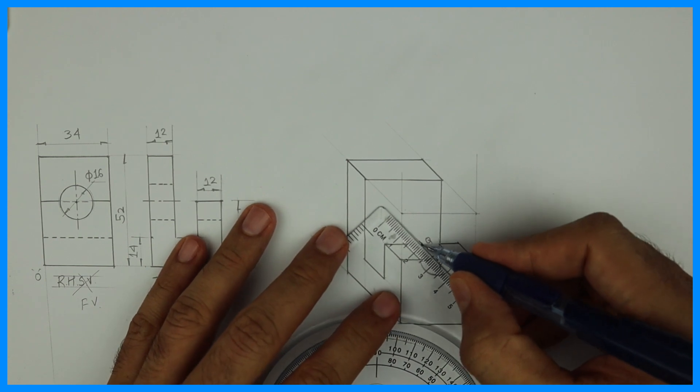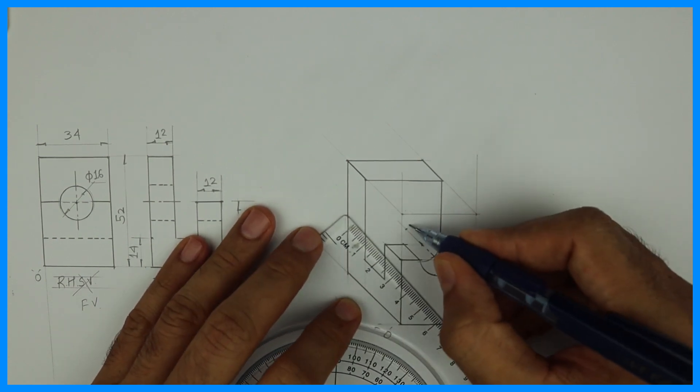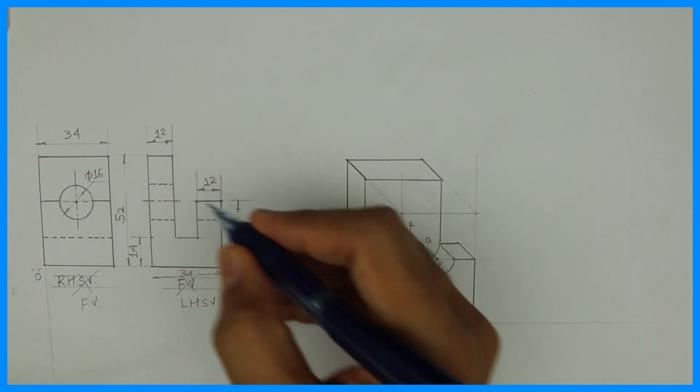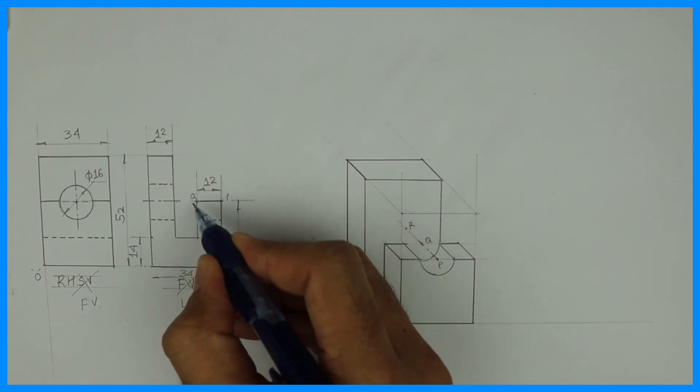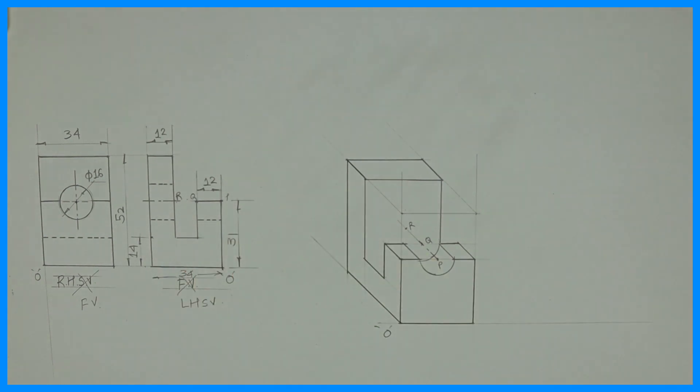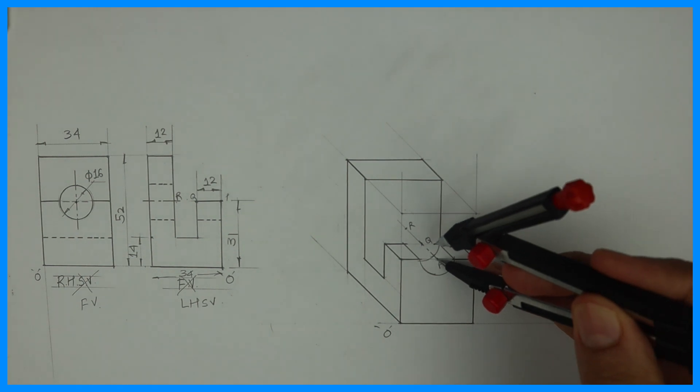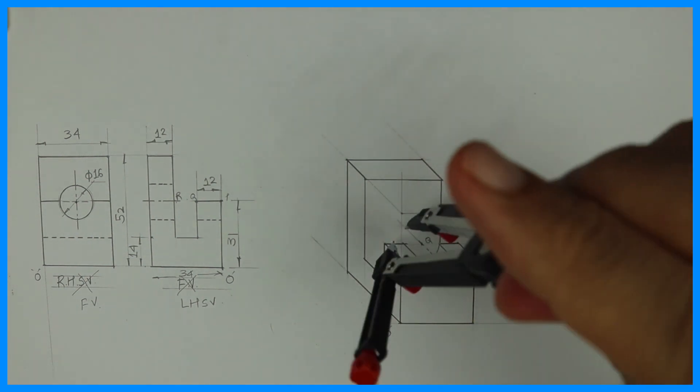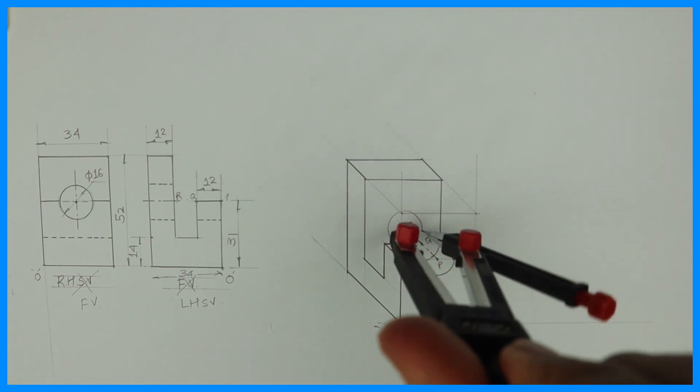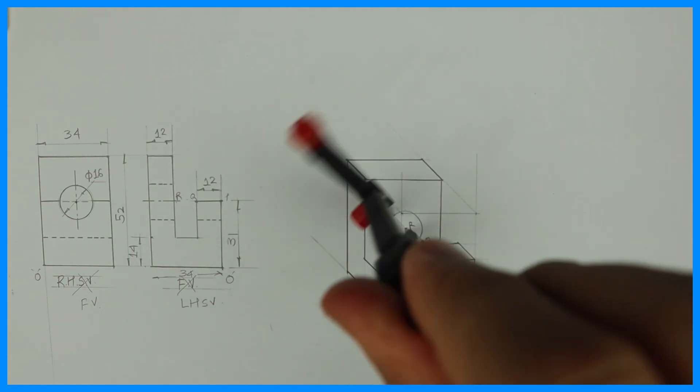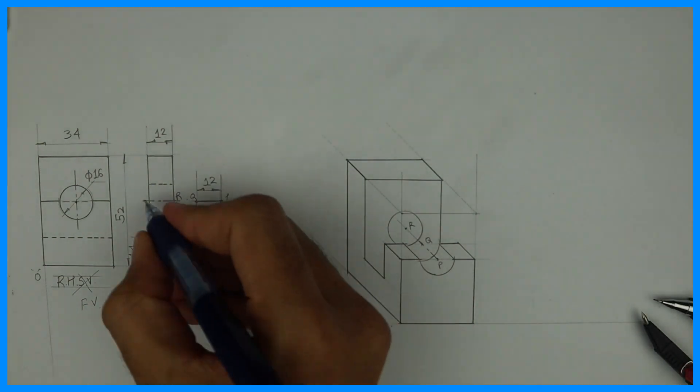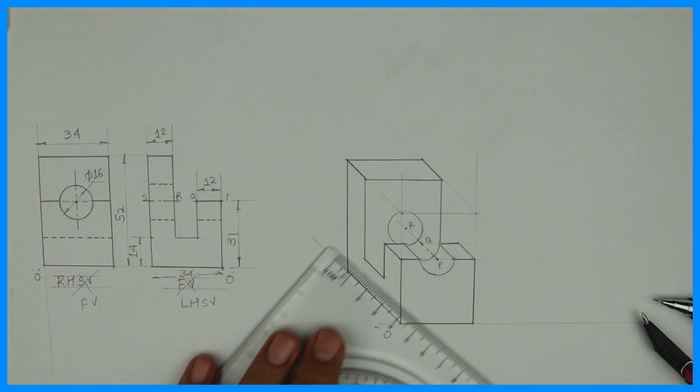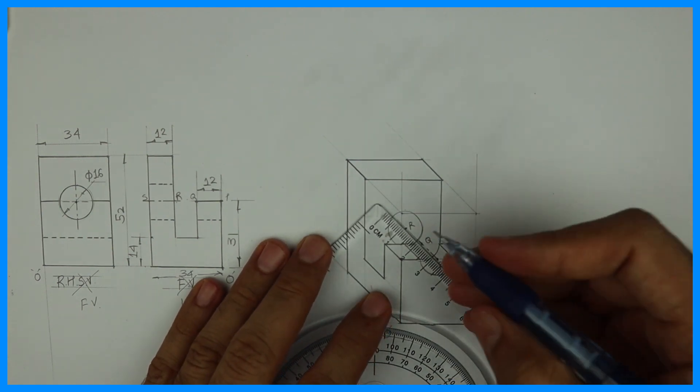So from Q will take 10. That will be R. See here. Let's say this is P Q R. So from R we'll draw radius 8. Then this is P Q R.